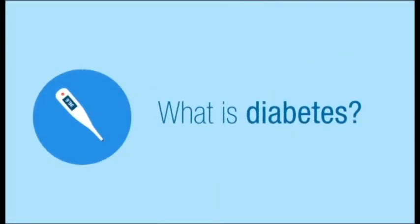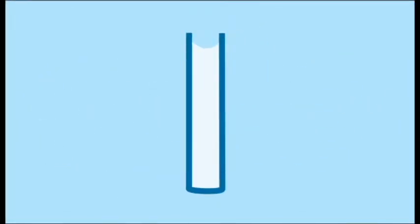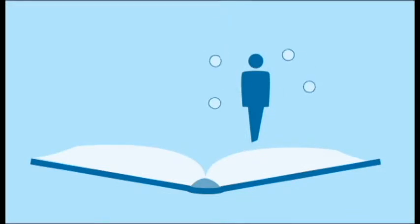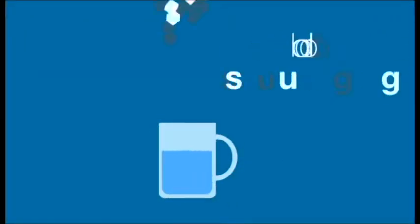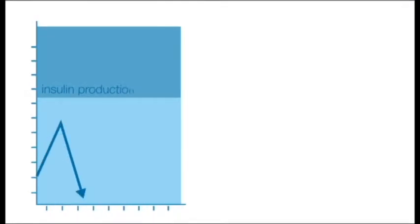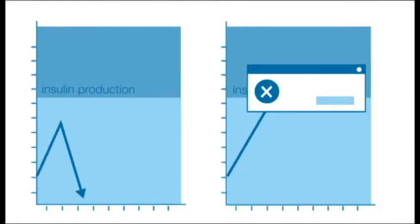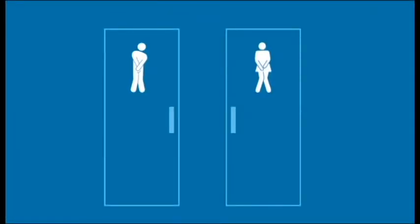What is diabetes? Diabetes describes a group of metabolic diseases in which the person has high blood sugar, either because insulin production is inadequate or because the body cells do not respond properly to insulin. Patients with diabetes will typically experience frequent urination, increased thirst, and hunger.